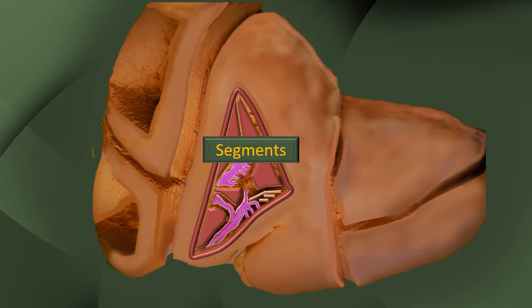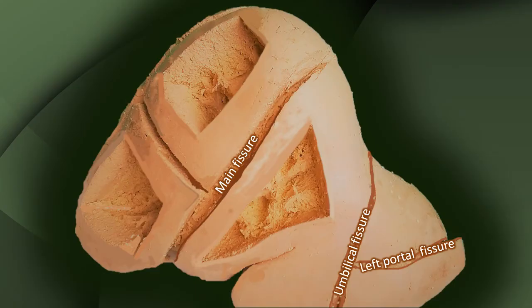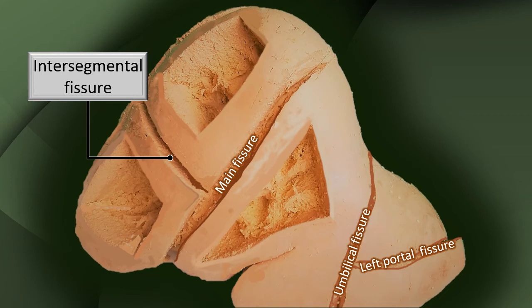This was the foundation laid as a basic level of knowledge to understand the segmental anatomy of the liver. Now let us try to identify the segments. To recapitulate: main fissure, umbilical fissure, left portal fissure, and right portal fissure. We will now introduce the intersegmental fissure. All the others are also intersegmental fissures — they cut their respective sectors into two or more segments. Finally, we will have eight liver segments.